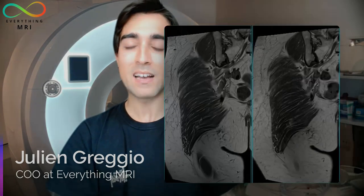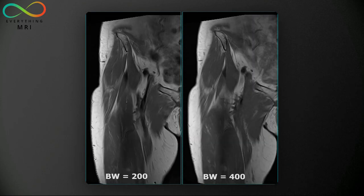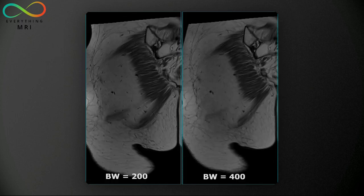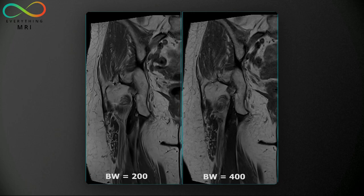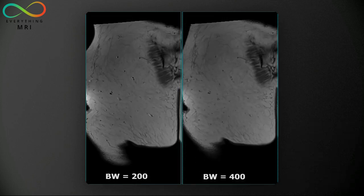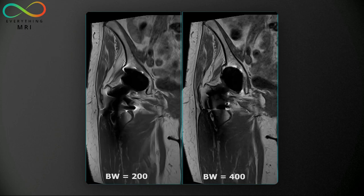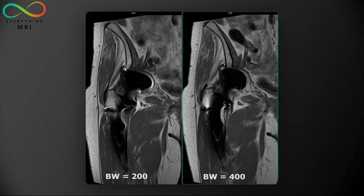Here we have on the left part of the screen a coronal T1 of the hip acquired with a low bandwidth, precisely around 200 Hz per pixel, and on the right part of the screen the same sequence acquired with a higher bandwidth, namely above 400. We can immediately notice that the level of distortion is much less pronounced using a high received bandwidth. We can clearly see the shape of the femoral head and the acetabulum, which appear instead pretty distorted when a lower bandwidth is employed. Also, the signal loss and signal pile-up due to the presence of the implant are fairly reduced at higher bandwidth values.